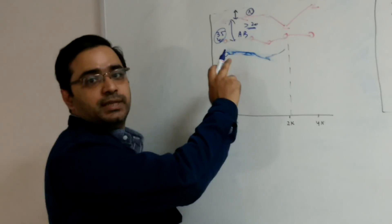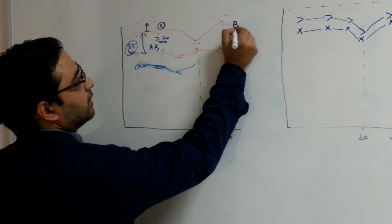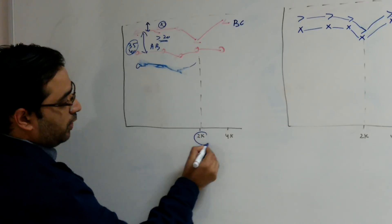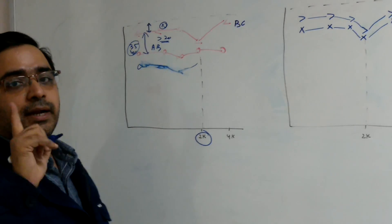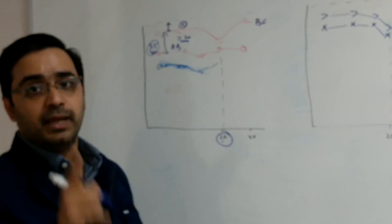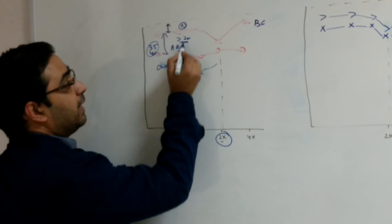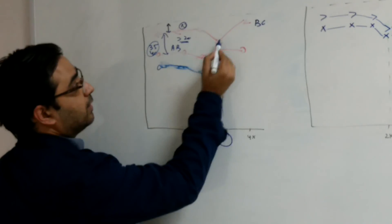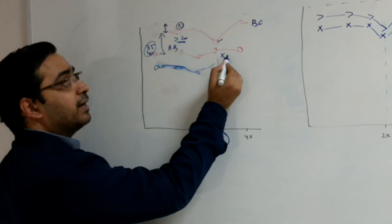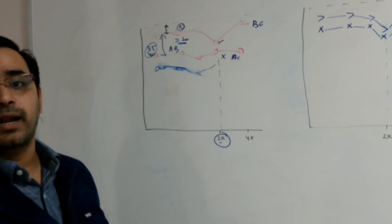The other thing we should observe in this graph is that in bone conduction, there is a dip at 2 kilohertz. This bone conduction dip at 2 kHz is not seen in air conduction. So the AB gap is present, the dip is in bone conduction only and not in air conduction — this is Carhart's notch.